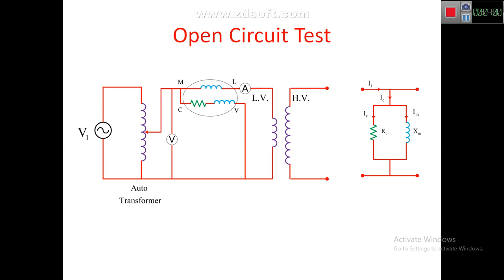The exciting current IE is divided into two parts: IC, the core loss component of current, and IM, the magnetizing component of current. IC flows through RC and IM flows through XM. Based on this equivalent circuit we can derive the necessary equations.